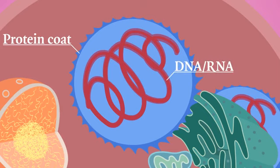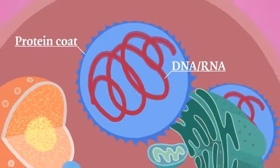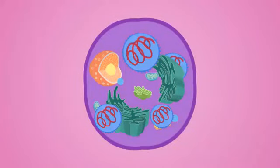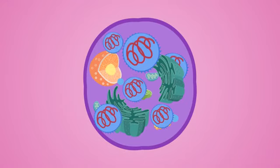A virus needs a host cell in order to function. And once it has found one, it injects its genetic material into the host cell, taking control of the cell's functions. The virus now controls the cell and uses its resources to reproduce, since it cannot reproduce on its own.